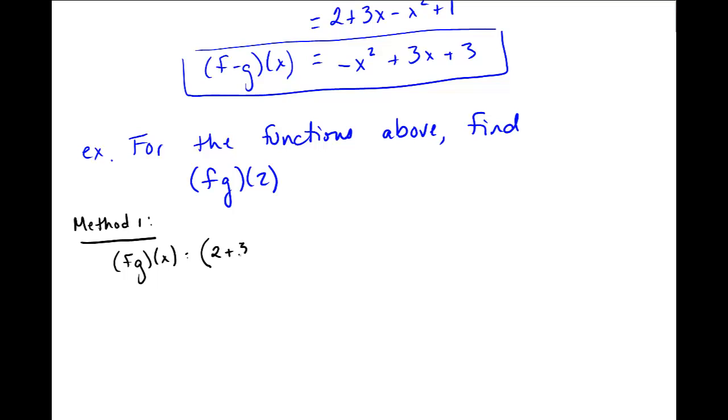I'll put in the f of x times g of x and then I'll plug in the actual formulas: 2 plus 3x times x squared minus 1. And then you can FOIL this out: 2x squared minus 2 plus 3x cubed minus 3x.